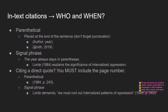An example of a parenthetical citation would be (Smith, 2019). The other way is through signal phrasing — when we signal to our readers within our writing that we are about to use a source. For example: Lorde (1984) explains the significance of internalized oppression. The year always stays in parentheses right next to the author's last name, whether the author's name is in parentheses or written within the sentence.